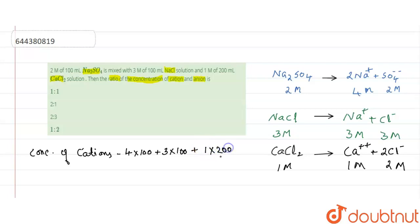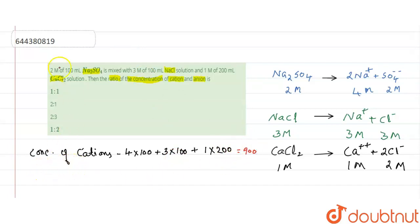Adding up the cations: 400 plus 300 gives 700, plus 200 gives 900. So the total moles of cations is 900.